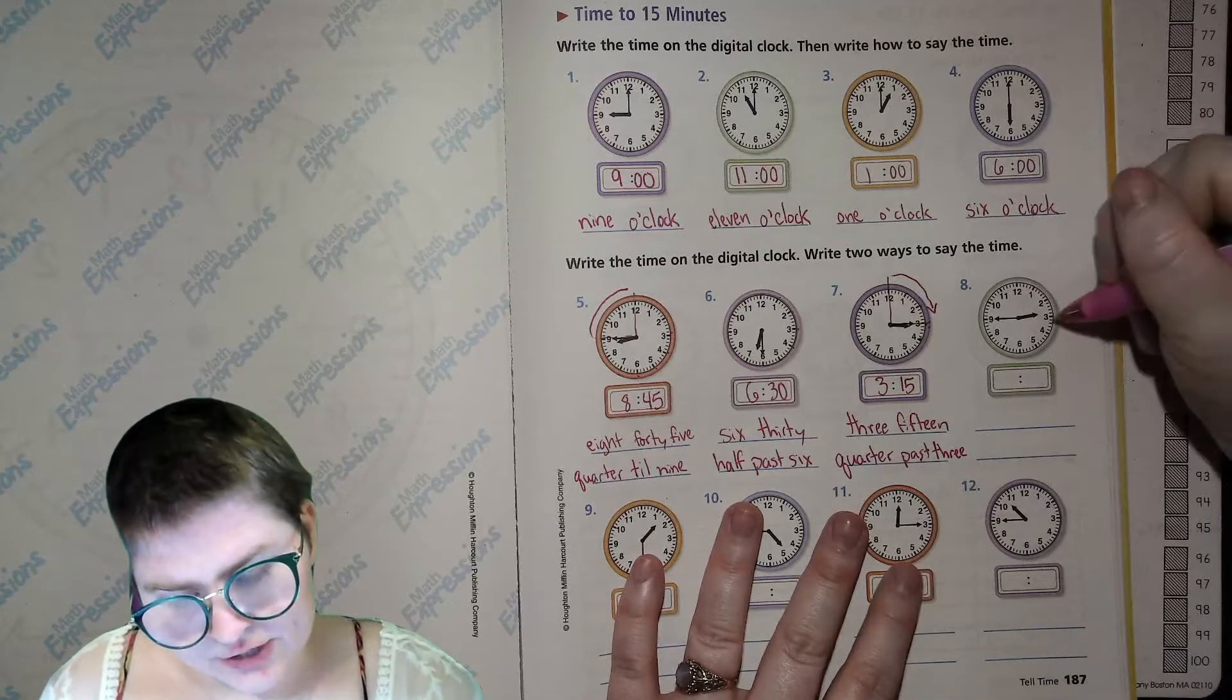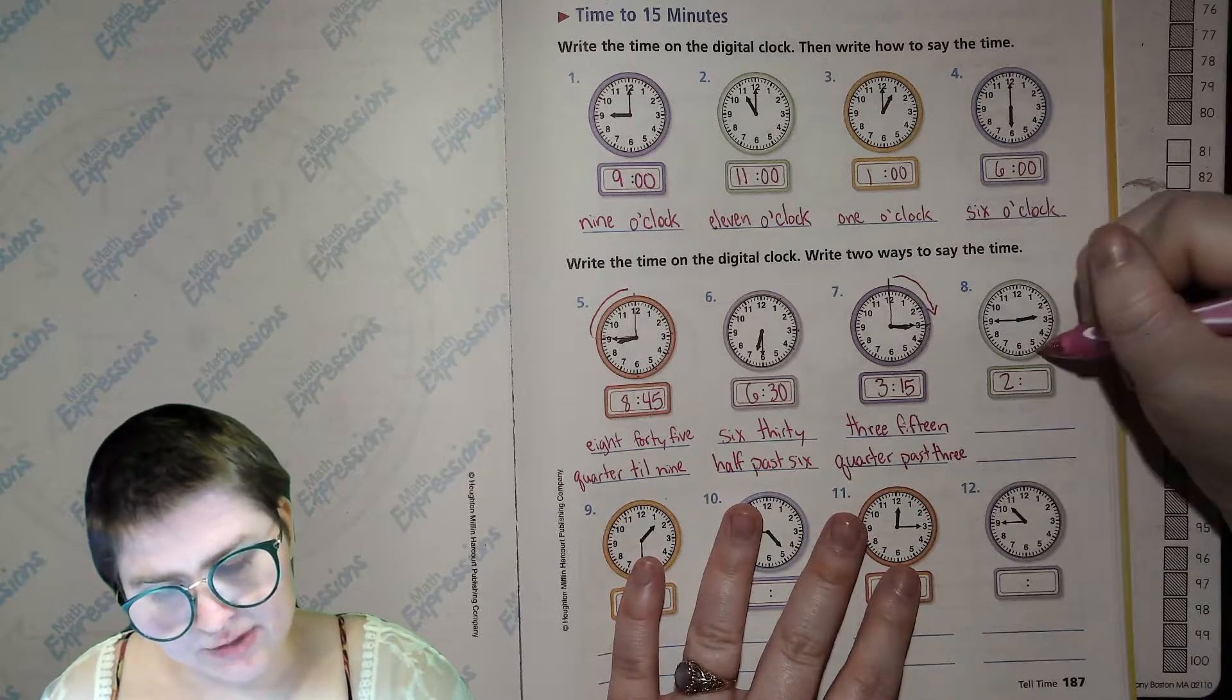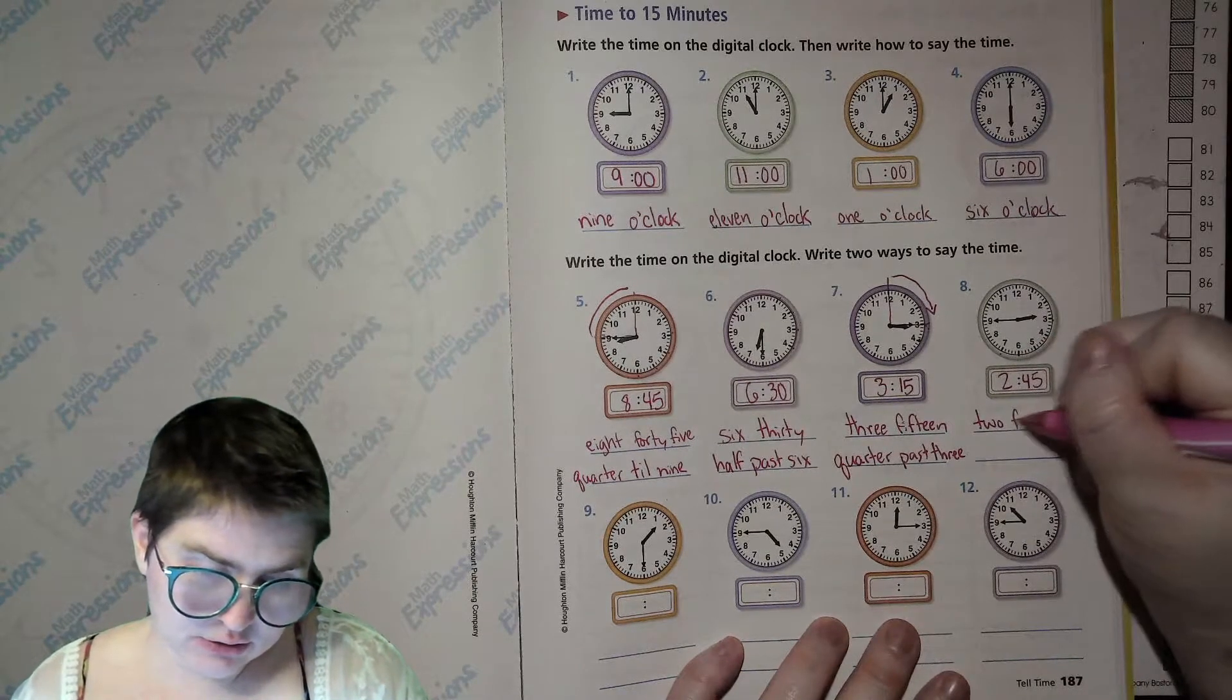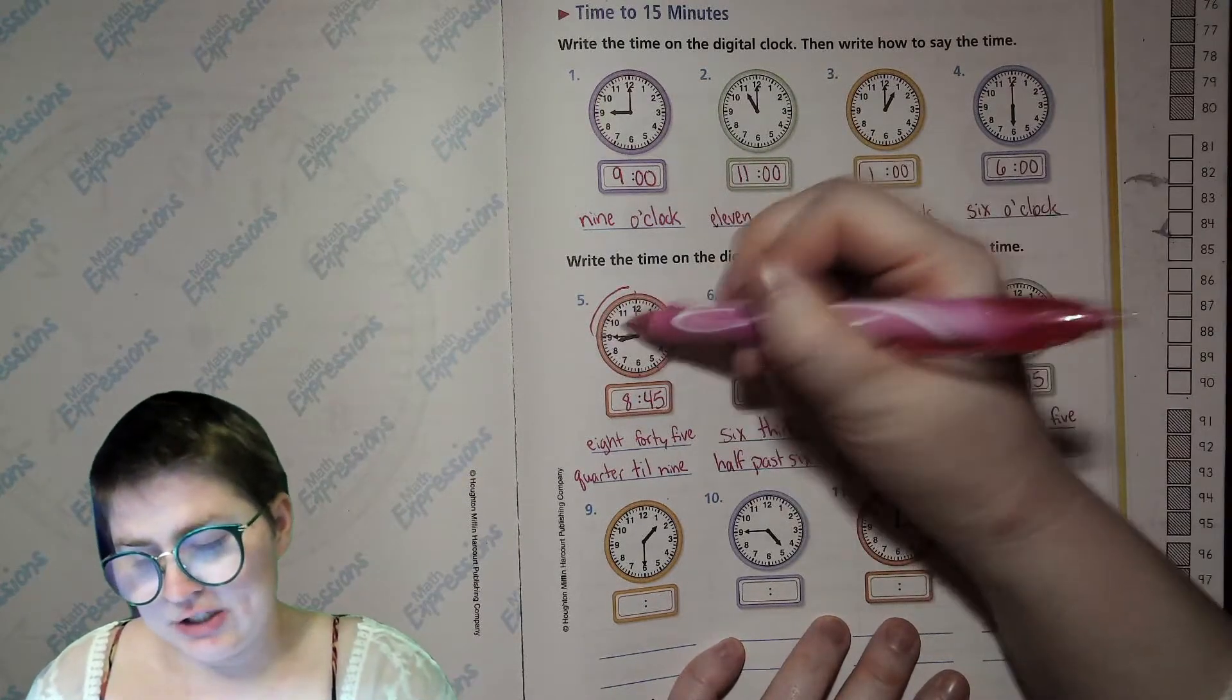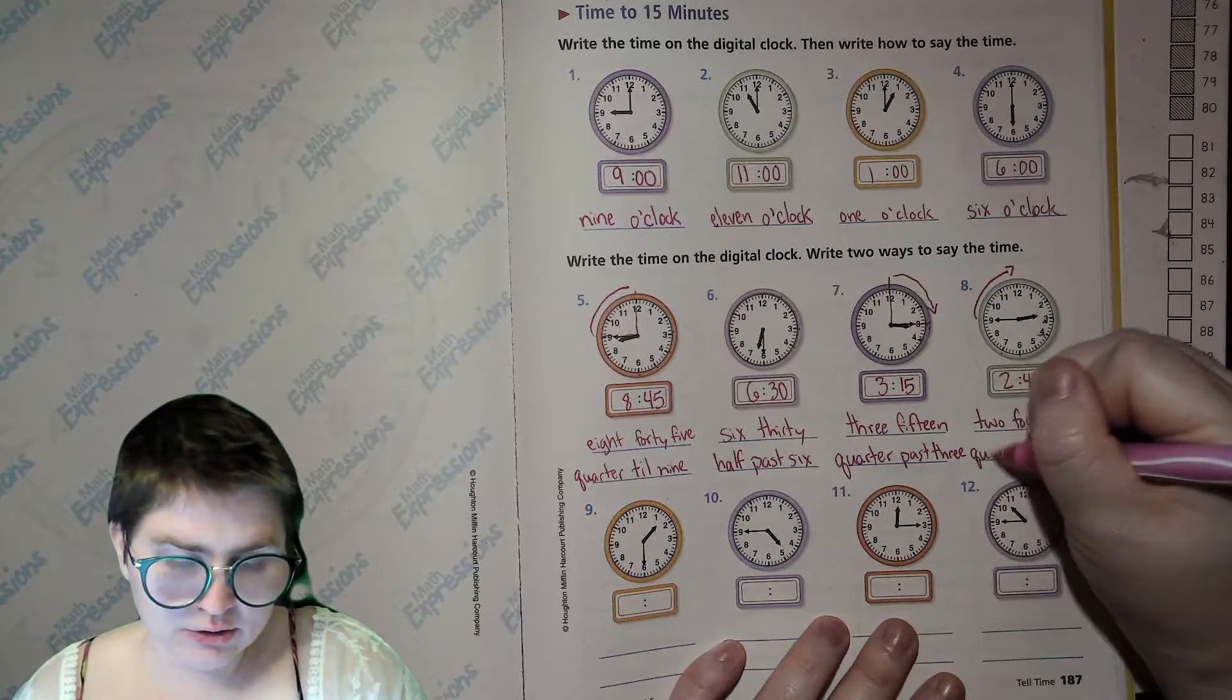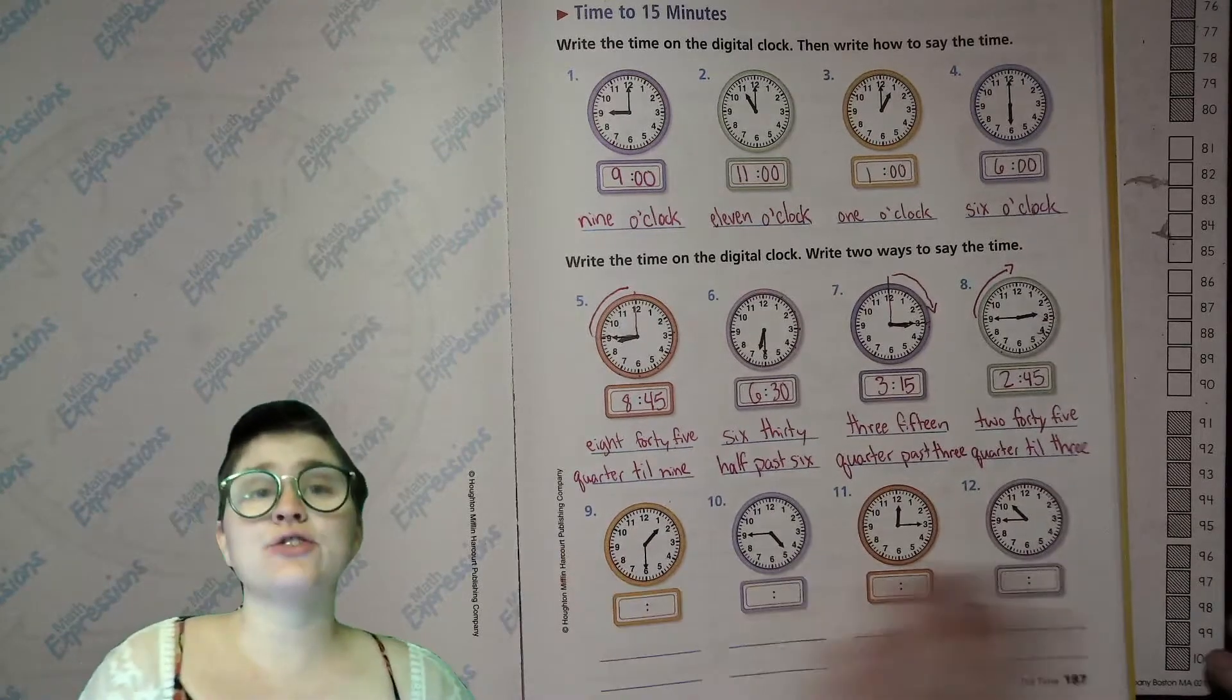Here we go. Checking our hour hand, not quite at the 3, which means it's still 2. So 2. Counting by fives. 5, 10, 15, 20, 25, 30, 35, 40, 45, 2, 45. You could say 2, 45. Here's another example. Just like this one. What do you say? We say it's a quarter till the next hour, which would be, oopsie, which should be 3. So quarter till 3. You go ahead and try these last ones on your own.